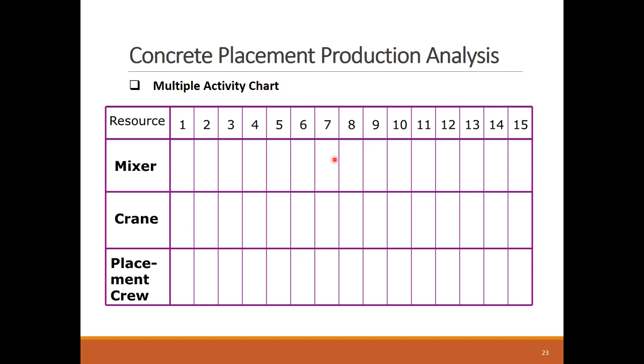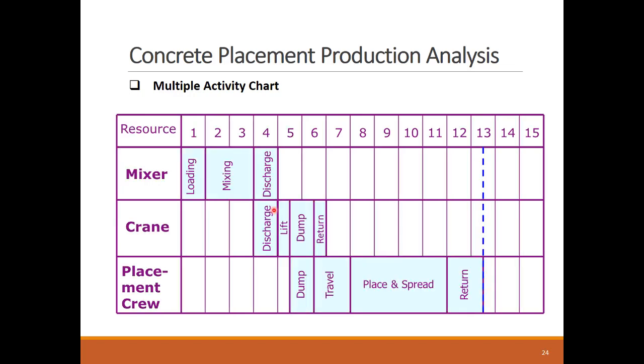We will use the multiple activity chart to track the progress of each resource in its own operation steps and identify the cycle time of the whole operation. We can see on the left side the three main resources and the timeline on the top of the chart. We applied before multiple activity chart in the earthwork hauling lesson. Please refer to this lesson for more detailed explanation on the use of this tool. We complete the chart for only one cycle and we see that all the tasks were covered and the last one finishes in 12.5 minutes.